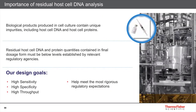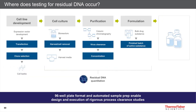Why do we need to monitor for residual host cell DNA? Biological products produced in any cell culture contain certain unique impurities, including host cell DNA and host cell proteins. These host cell impurities can affect both the shelf life of the drug product and the efficacy of the final product. As a result, there are regulatory expectations that need to be met in terms of levels of these host cell impurities. Testing can be done on the final drug product, but monitoring can start as early as the harvesting and cell removal stages.